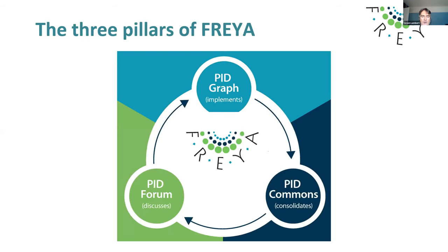The Freya project has three pillars: the PID Graph, the PID Forum, and the PID Commons. The PID Forum has actually materialized as a discussion forum website at PIDforum.org, which is a very active site for the community to come together, raise and discuss issues around persistent identifiers. This was set up within the Freya project, and I'm pleased to say we've actually assured its sustainability beyond the project.